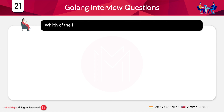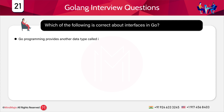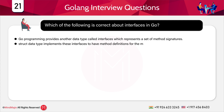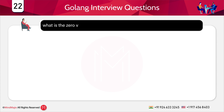Which of the following is correct about interfaces in Go? Option a: Go provides a data type called interface which represents a set of method signatures. Option b: struct data type implements these interfaces to have method definitions for the method signatures. Option c: both of the above. The answer is c) both of the above — interfaces represent method signatures, and structs implement them.